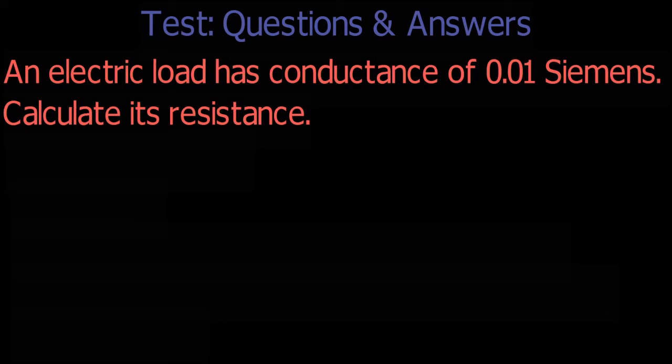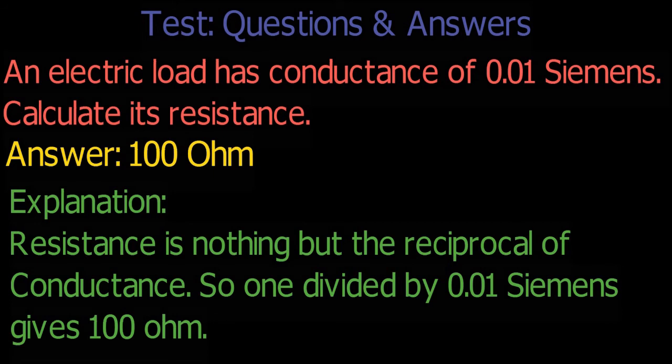The answer is 100 ohm. Explanation: Resistance is the reciprocal of conductance. So 1 divided by 0.01 Siemens gives 100 ohm.